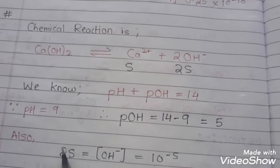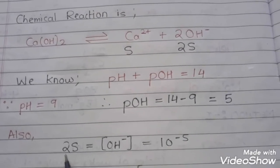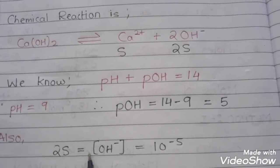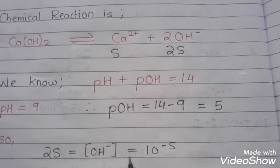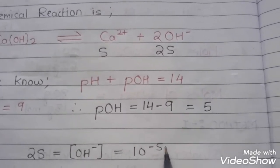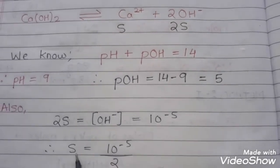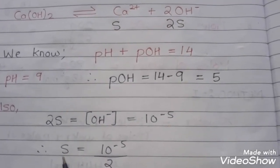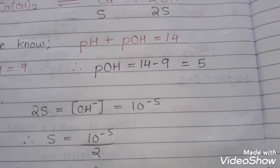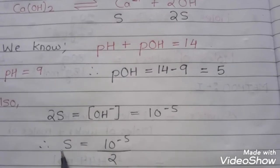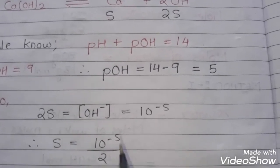The stoichiometry of hydroxide ion is 2, so 2s equals 10 raised to minus 5. Once we rearrange and solve this, we get the value of s, which is 10 raised to minus 5 divided by 2. So we have got the value of s, one stoichiometric.